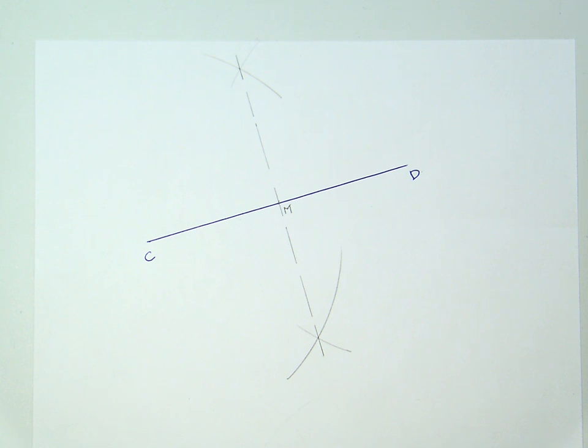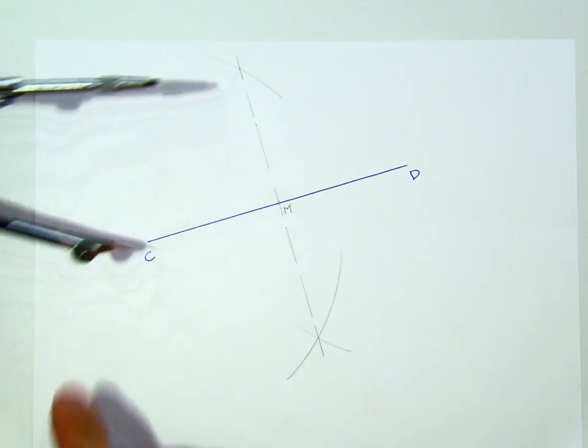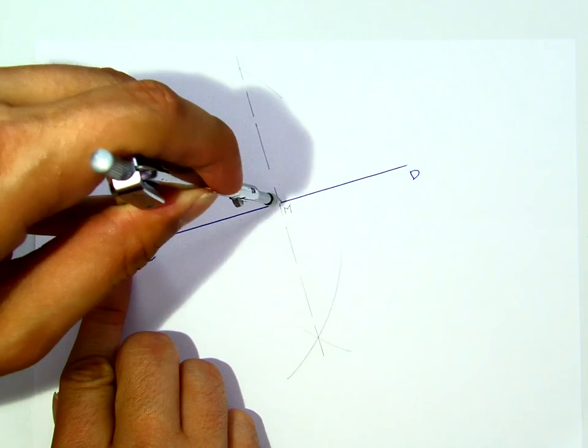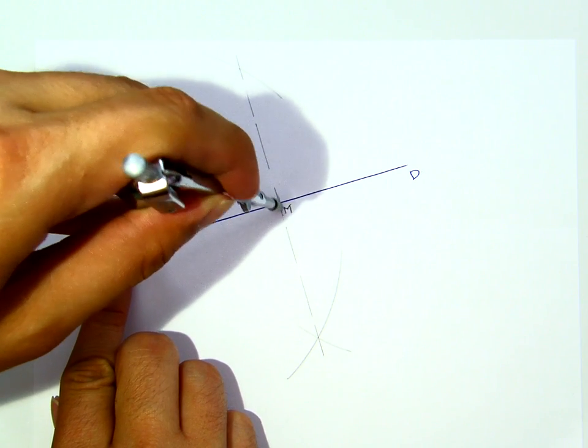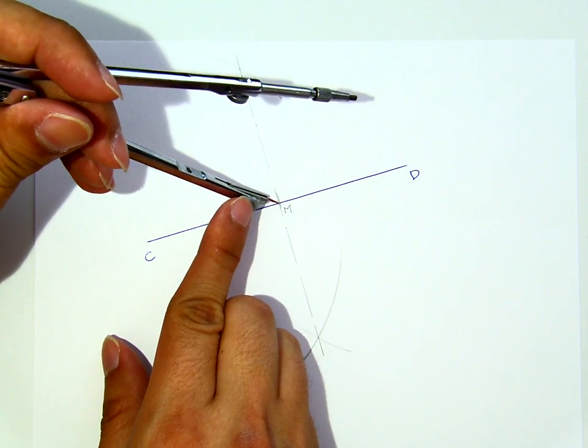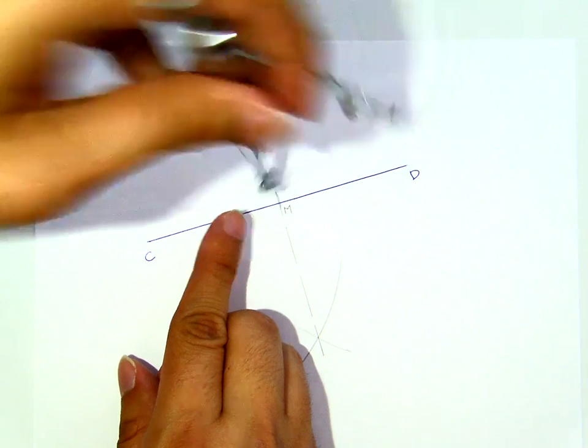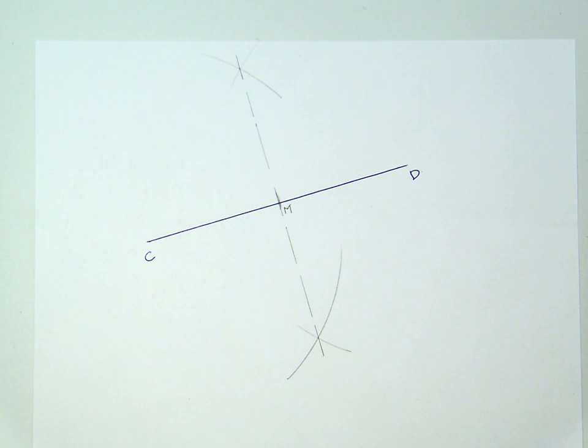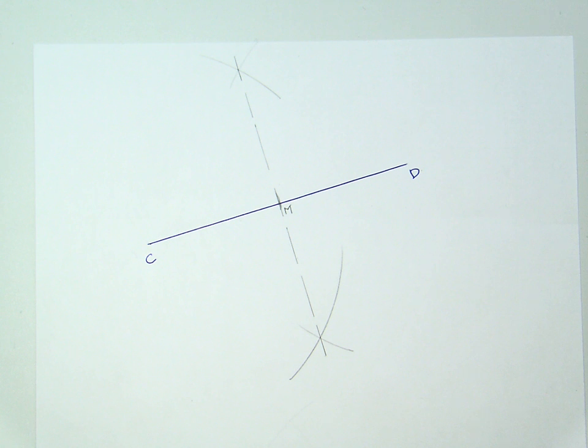Just for fun, I will show you that the segment C to M is congruent to segment D to M. Now, this is the demonstration of construction 2 in which we construct a midpoint M of a given line segment AB or, in this case, segment CD.